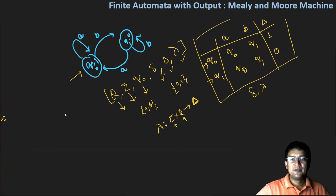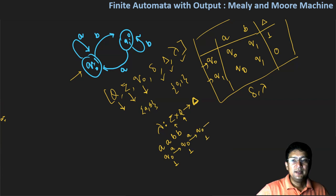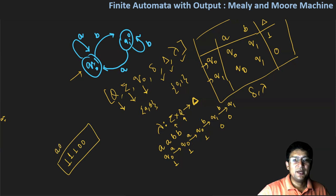Let's do some transitions by taking input AABB and see what the output will be for the Moore machine. I start at q zero state, so output one is produced. Taking A, I go to q zero and one is produced. Taking another A, I remain at q zero and one is produced. Taking B, I go to q one and output zero is produced. Taking another B, I remain at q one and output zero is produced. So the output is one, one, one, zero, zero. I took a four-length string as input and a five-length string is produced as output — meaning if I take an N-length string, the N plus one length string is produced as output in the Moore machine.